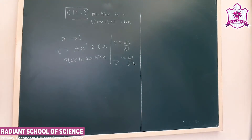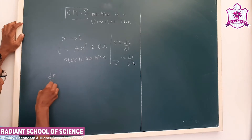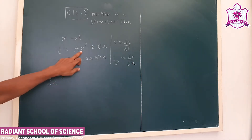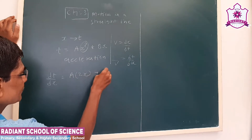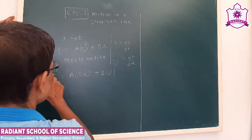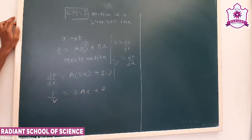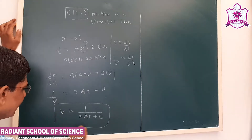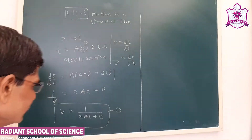Now if I take the derivative with respect to x, there will be dt/dx. The derivative of ax² is 2ax, and b is constant so derivative of x is 1. So we know dt/dx = 1/v = 2ax + b. Taking the reciprocal, velocity v = 1/(2ax + b).